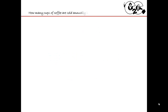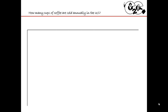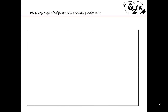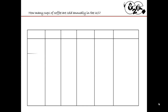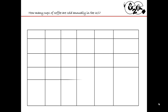So let's say we get this question: how many cups of coffee are sold annually in the U.S.? What I'm going to do is draw on my sheet of paper this table. I'm going to put in some fields that I know I'm going to need, as well as rows for the breakdown of my population.